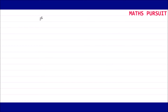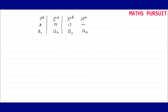Whatever is given in the question, I am putting it in a tabular form with the first term, second term, third term, and 13th term. The first term a1 is 3, second term a2 is 10, third term a3 is 17, and the 13th term a13 we do not know. This tabular form will help us make our calculations without getting confused among the numbers.